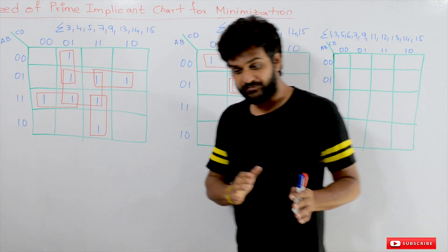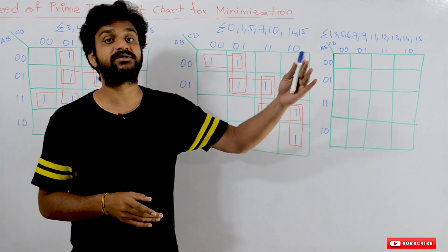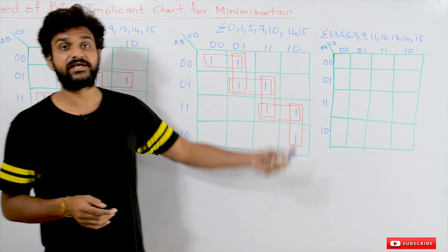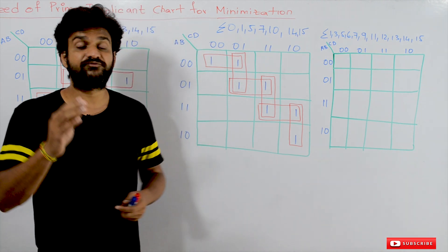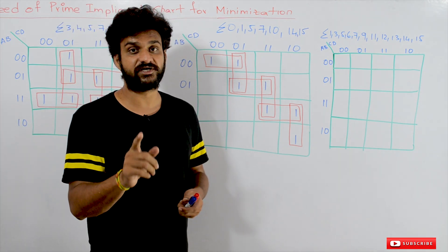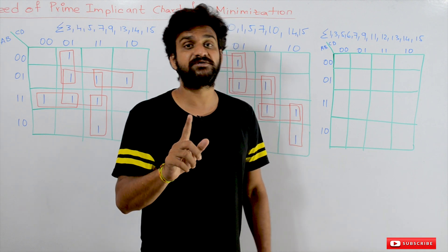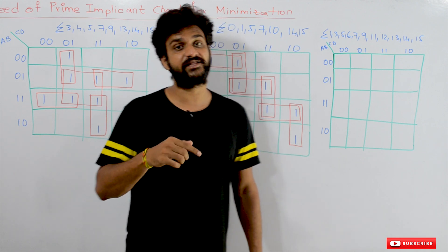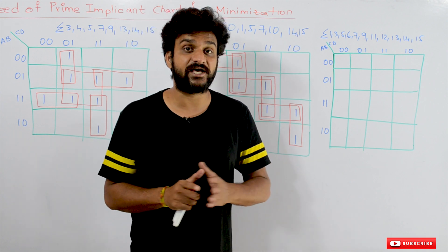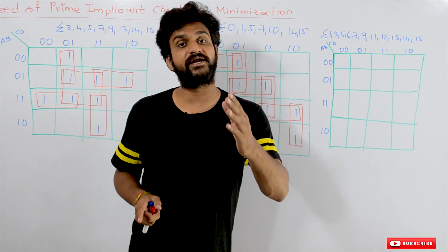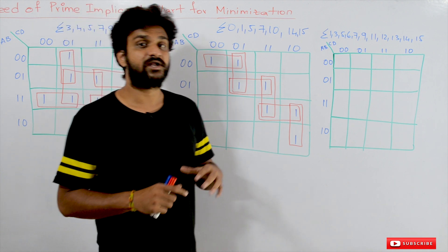In our previous classes, we have solved many examples on minimization by using K-maps — two variable, three variable, and four variable K-maps. If you haven't watched those videos, please watch them and come back here, because the way in which we minimized Boolean expressions using K-maps is very important to understand the concept in this class. Our suggestion is to follow the entire course playlist, the link for which is provided in the description below.